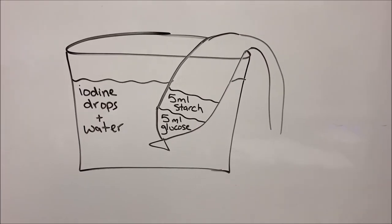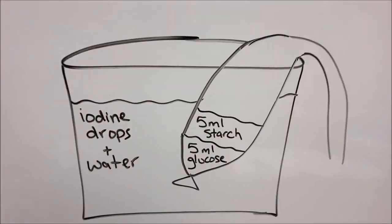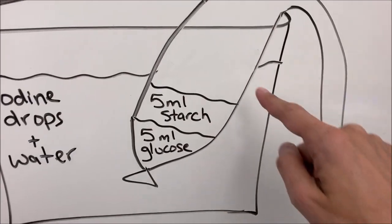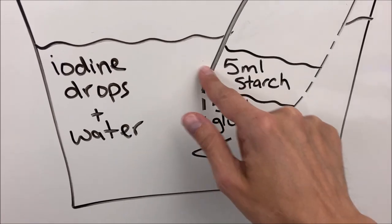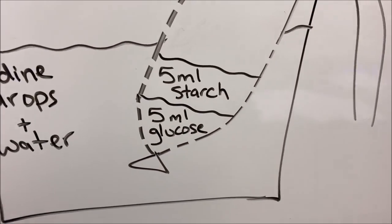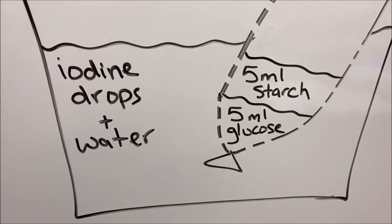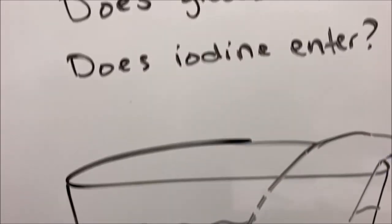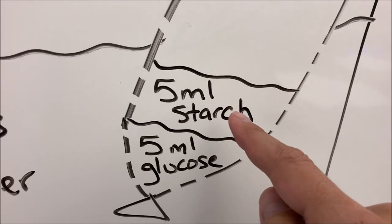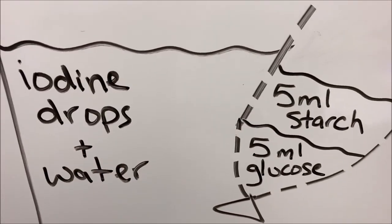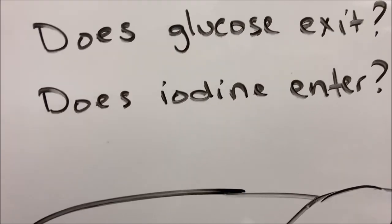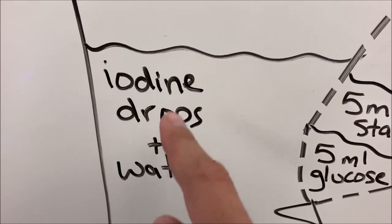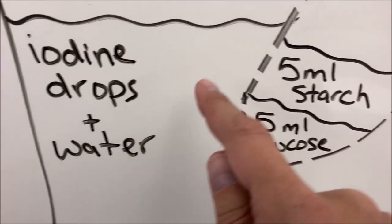Before I show you the results, here's a drawing summarizing what happened. The dialysis tube has little tiny microscopic holes — you can't see them with the naked eye, but they're there. Because there are little holes, we're trying to figure out: can some molecules pass through? Does starch exit? Does glucose diffuse out? Does iodine enter into the bag? We should be able to answer these questions by making observations.